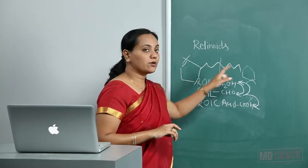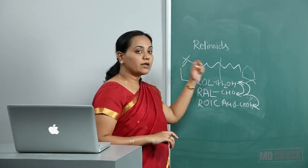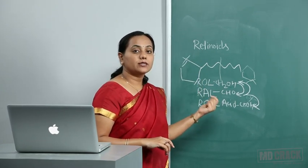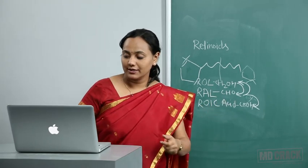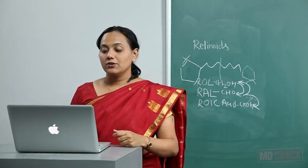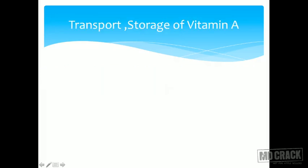Beta carotene, when split, can form retinol. This beta carotene is split and converted into retinol by the enzyme beta carotene dioxygenase. This enzymatic conversion occurs either in the intestinal cell or in the liver, forming retinol and retinoic acid.